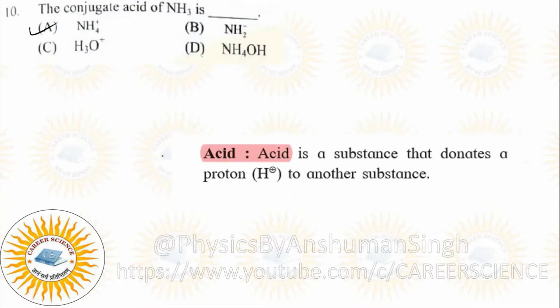So, Arrhenius theory, Bronsted-Lowry theory, Lewis theory — these are the three theories of acid-base concepts. Let's study the concept of NH3.